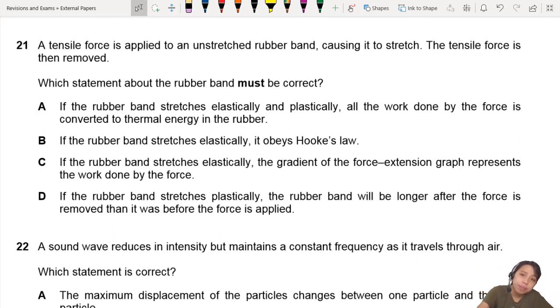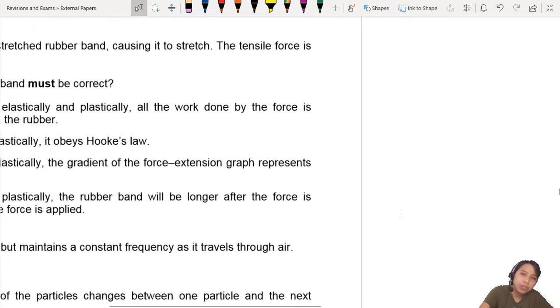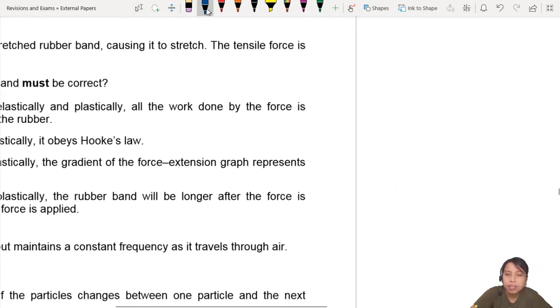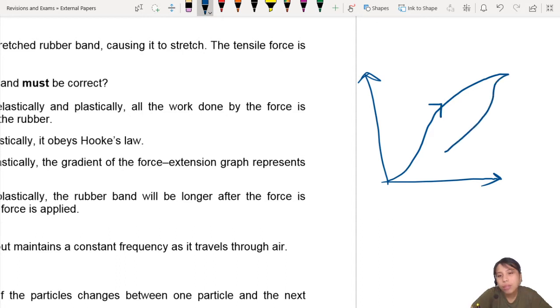Do you know how a rubber band graph looks? If you draw the force-extension or stress-strain curve, it will look something like this - a stretched funny shape. That's the loading curve. When you unload the curve, the rubber band goes back to its original extension. That's what it means.